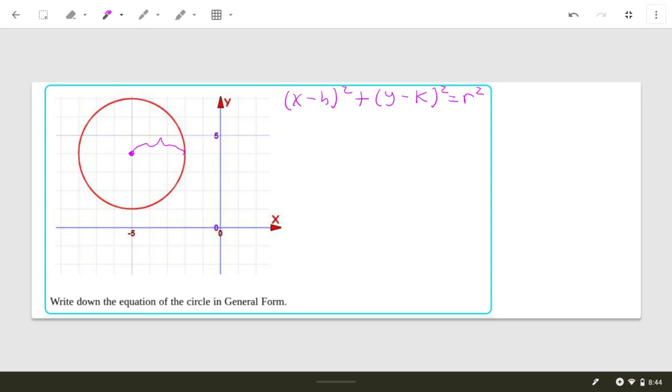Alright, so our center, if we count over, it's negative 5 for x, and it looks like 4 for y. So the center is going to be negative 5 comma 4, and our radius looks like it's 3 units.